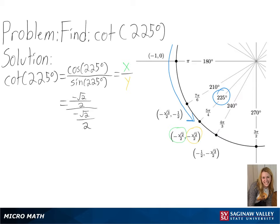So we will get a negative square root of 2 over 2 divided by a negative square root of 2 over 2. And simplifying this, we get 1 as our final answer.